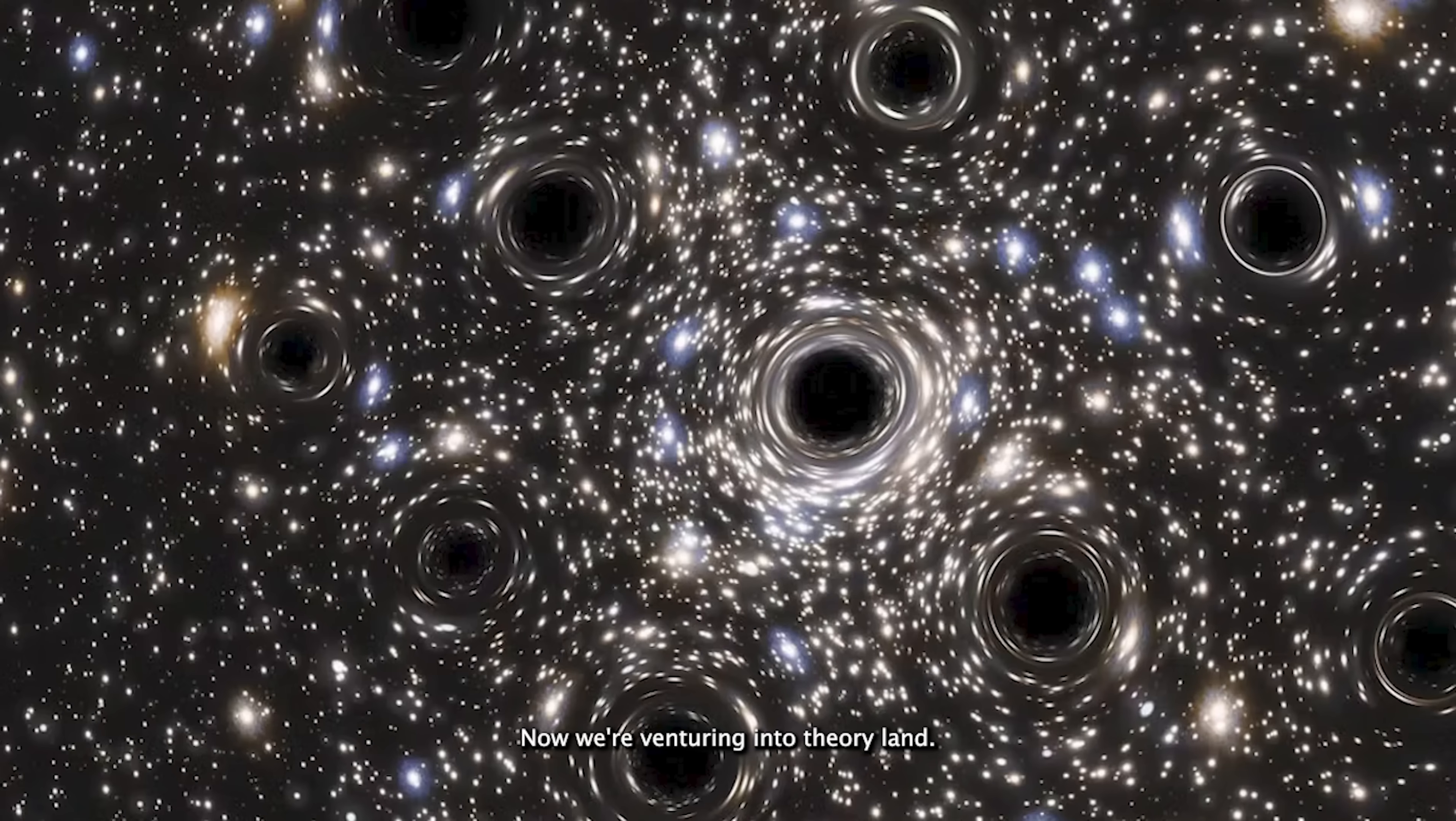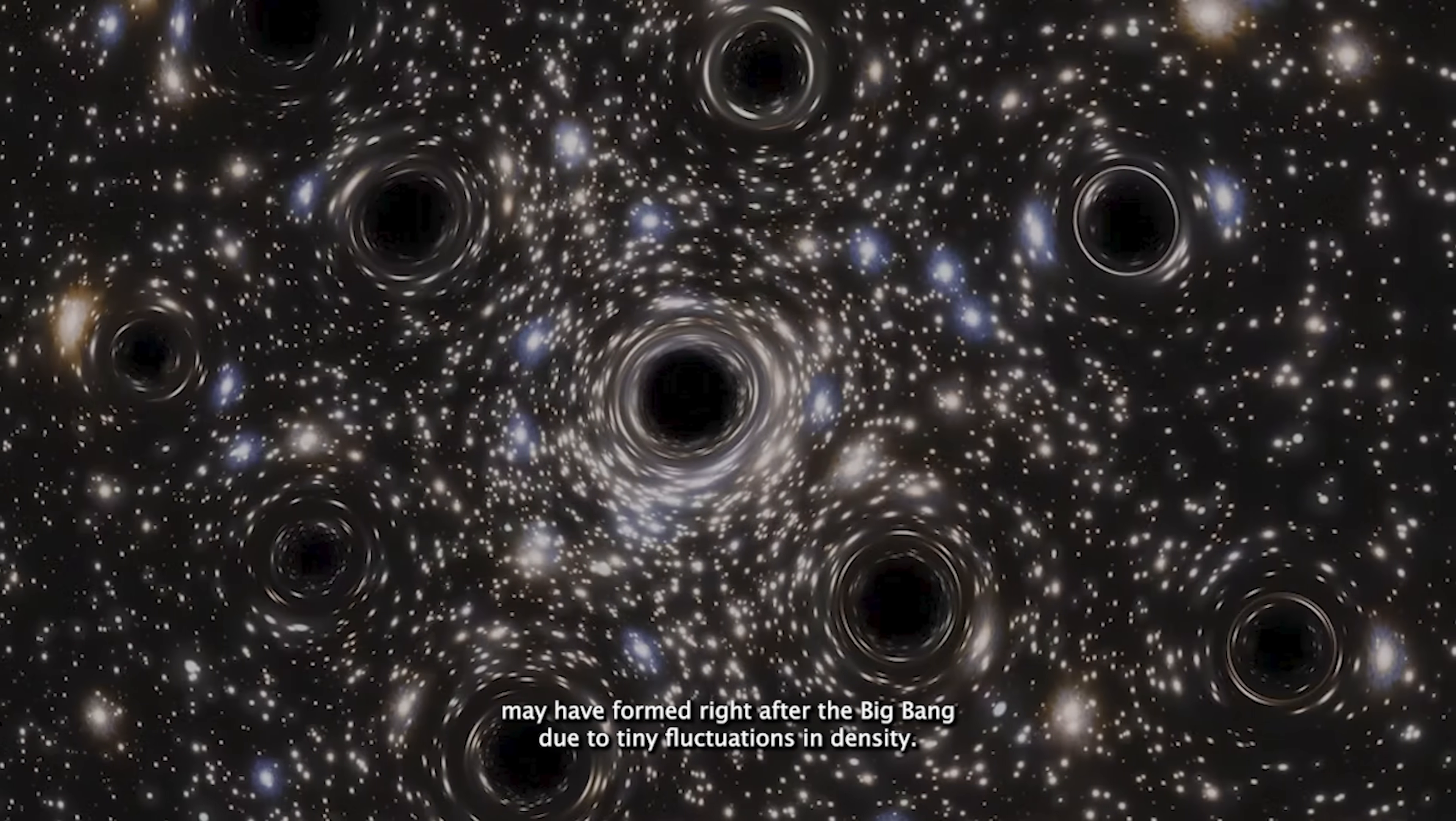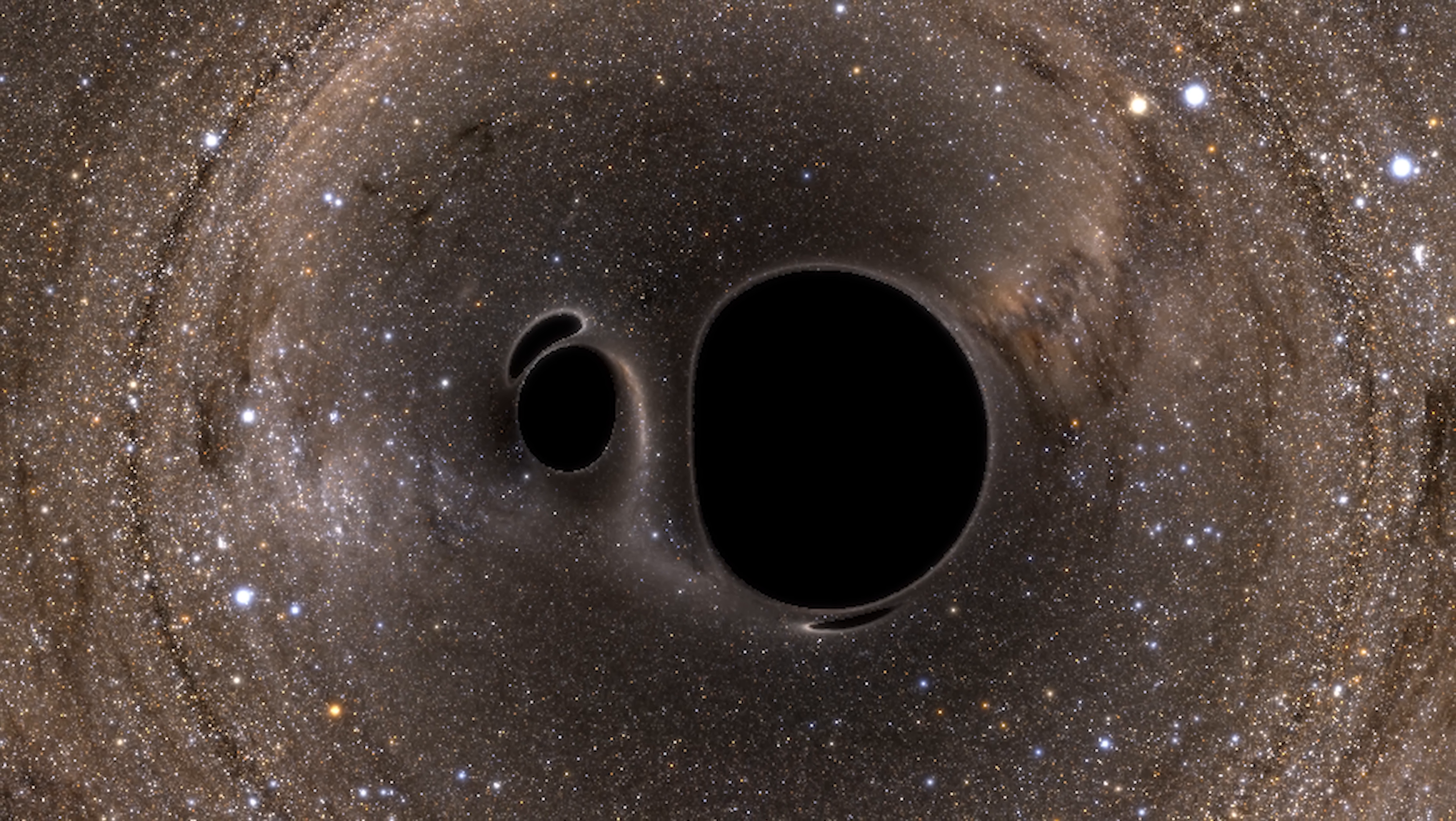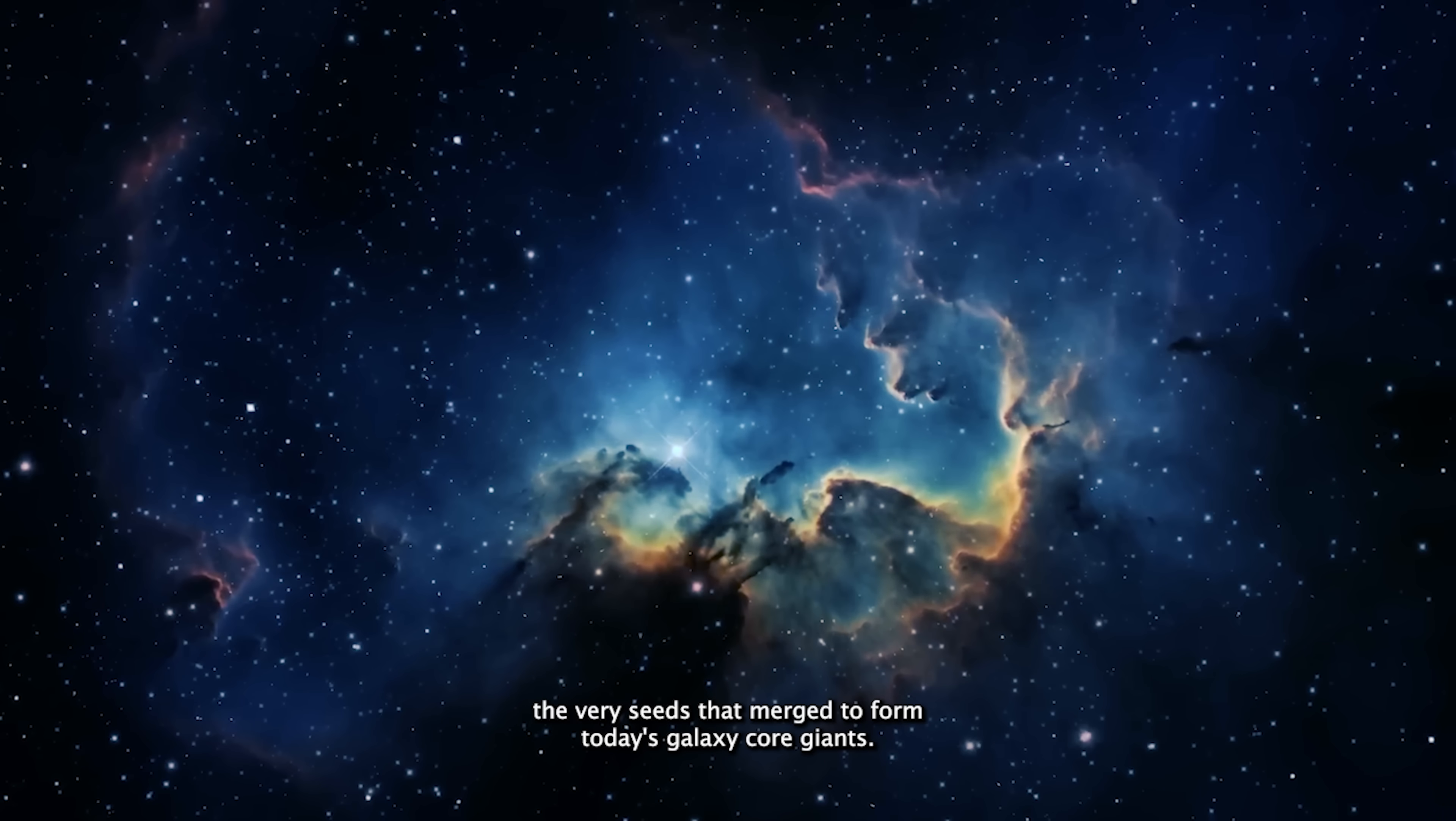Four, primordial black holes. Now we're venturing into theory land. These hypothetical relics may have formed right after the Big Bang due to tiny fluctuations in density. If they exist, they could hold the key to unlocking the mysteries of dark matter. And they might have been the very seeds that merged to form today's galaxy core giants.